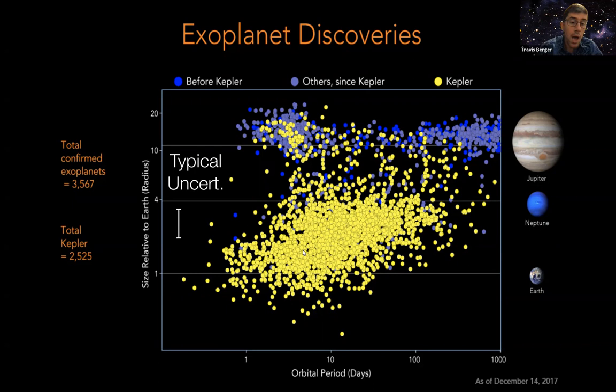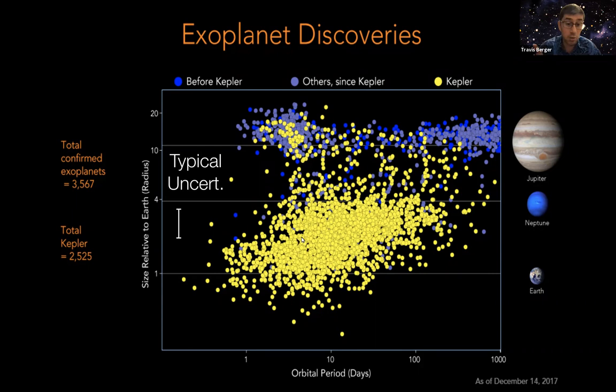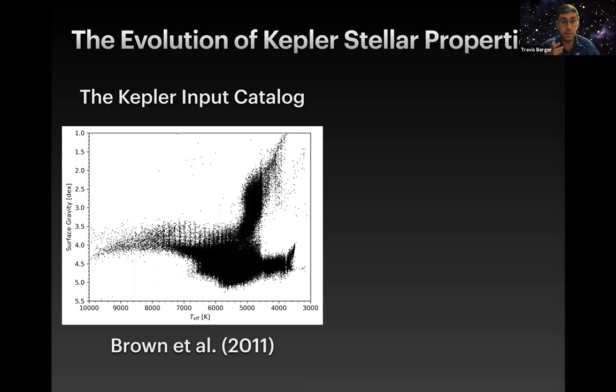Figuring out exactly what's going on with these planets is obviously a very interesting scientific pursuit. There's also a white bar plotted here representing the typical uncertainty for each of these planets at this time — determining their exact properties is definitely difficult. This was actually limited by the precision of the Kepler stellar properties at the time. The first thing to discuss is the Kepler input catalog, detailed in Brown et al. 2011, whose major purpose was target selection for the Kepler mission.